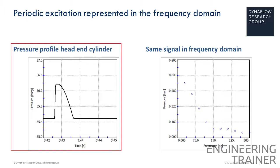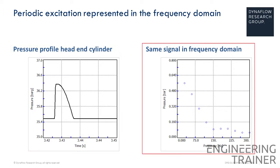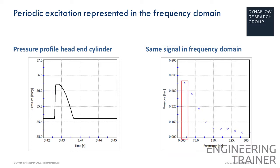A nice thing about periodic signals is that they can be decomposed into the frequency domain by stating that the signal is a combination of an infinite number of sine waves. The resulting decomposition in the frequency domain is shown on the right. The signal in this example is periodic with a frequency of 35 Hz. This lowest frequency present in our signal is called the base frequency, and it is directly related to the RPM of your pump.